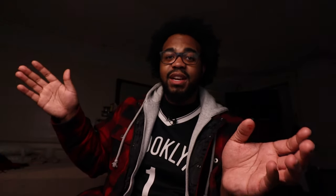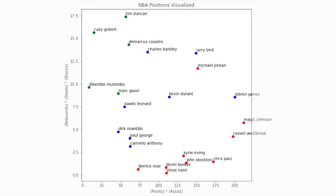Also, every player's play style is different. Some players are so dominant in their area that they play above and beyond into other positions. This chart here shows that LeBron James and Michael Jordan are so good at forward and guard respectively that they not only excel at their own positions but also cross into other positions as well. That's probably why we predicted Kevin Durant as a guard when he's actually a forward.